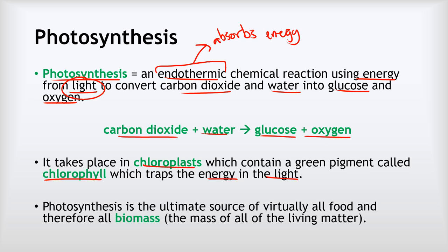Photosynthesis is one of, if not the most important chemical reaction in the world, because it is the ultimate source of virtually all the food we eat and therefore all biomass — the mass of all living matter in an area. Everything that makes up your body has come from food, which came ultimately from plants, even if you've eaten meat, since those animals ate plants themselves. Without photosynthesis, none of us — plant or animal — would be here.